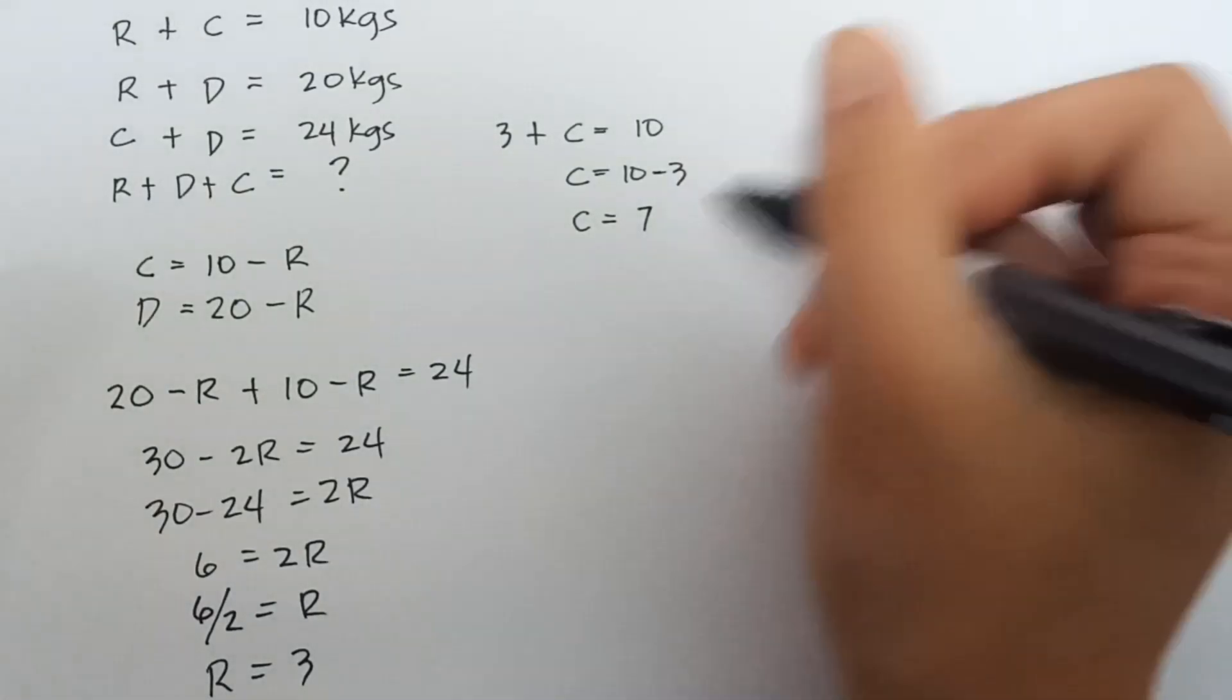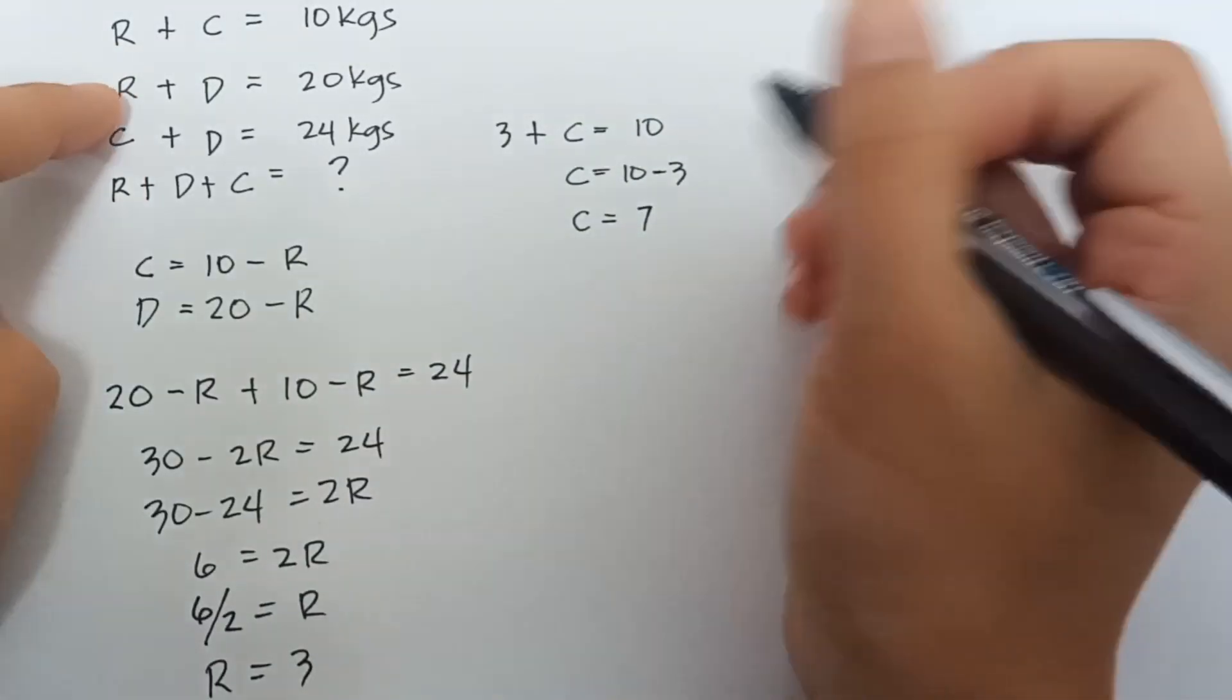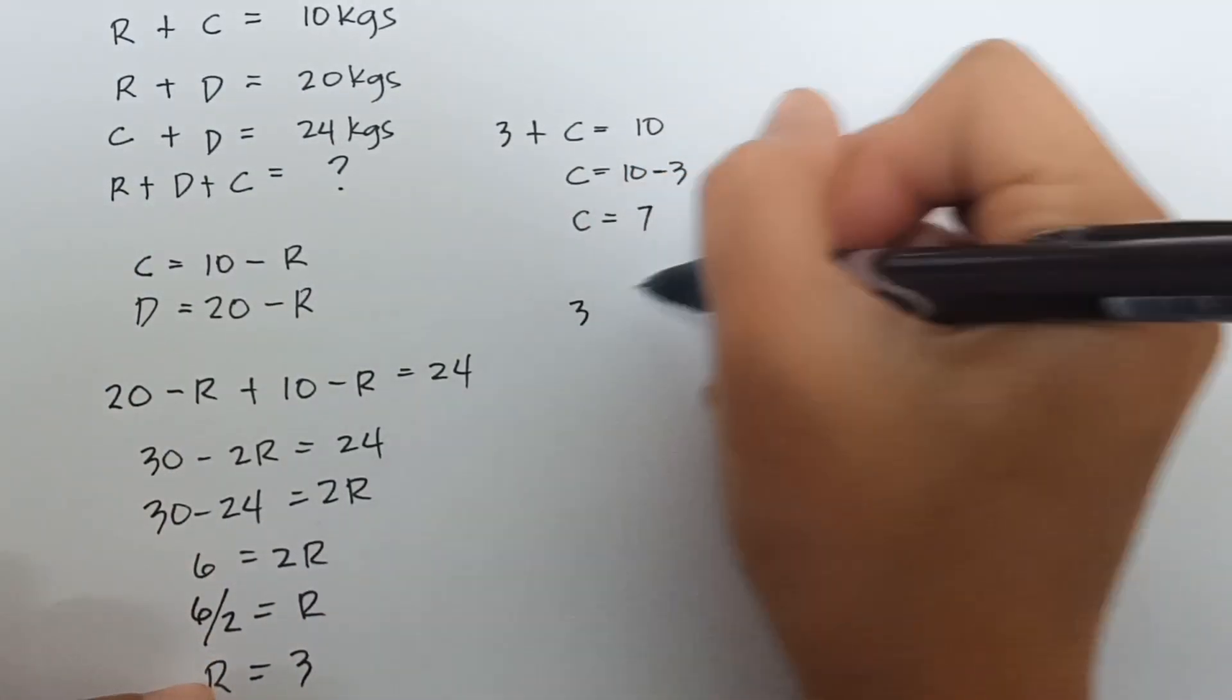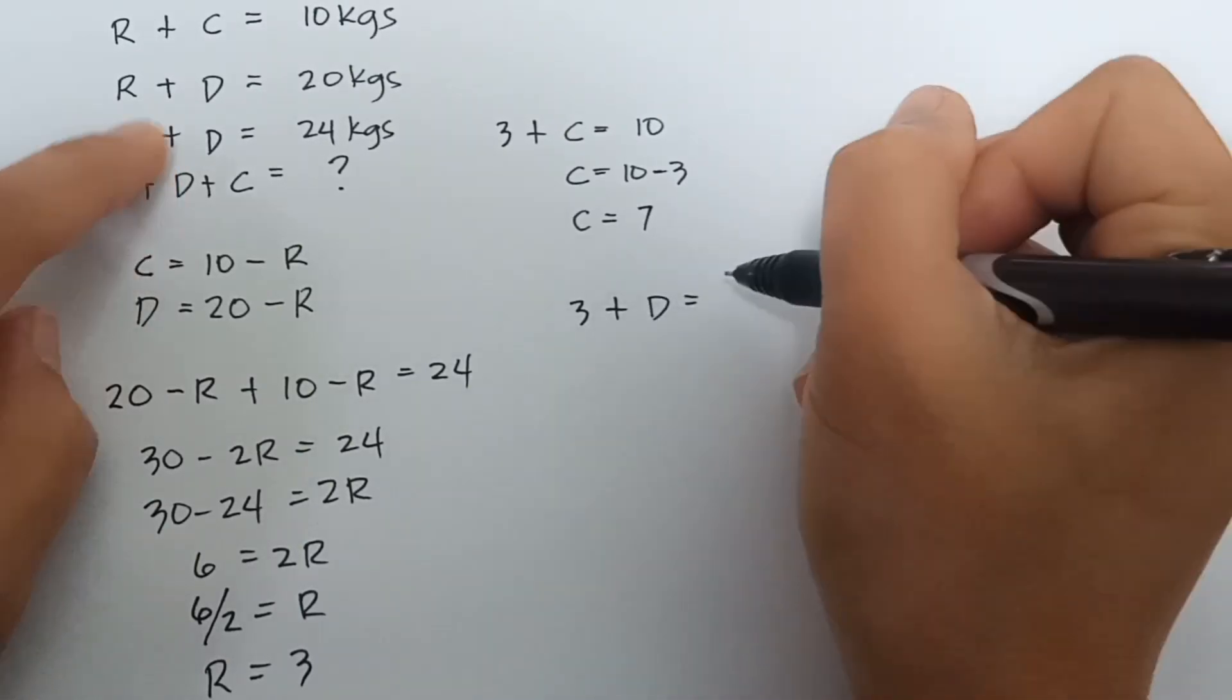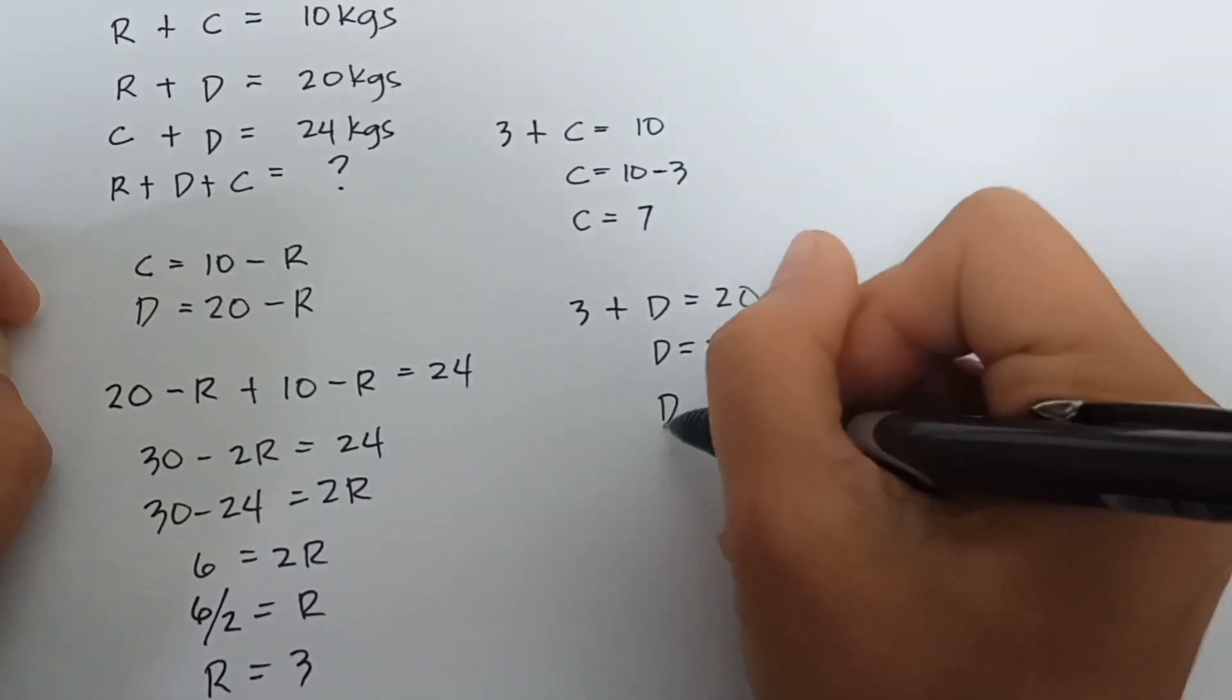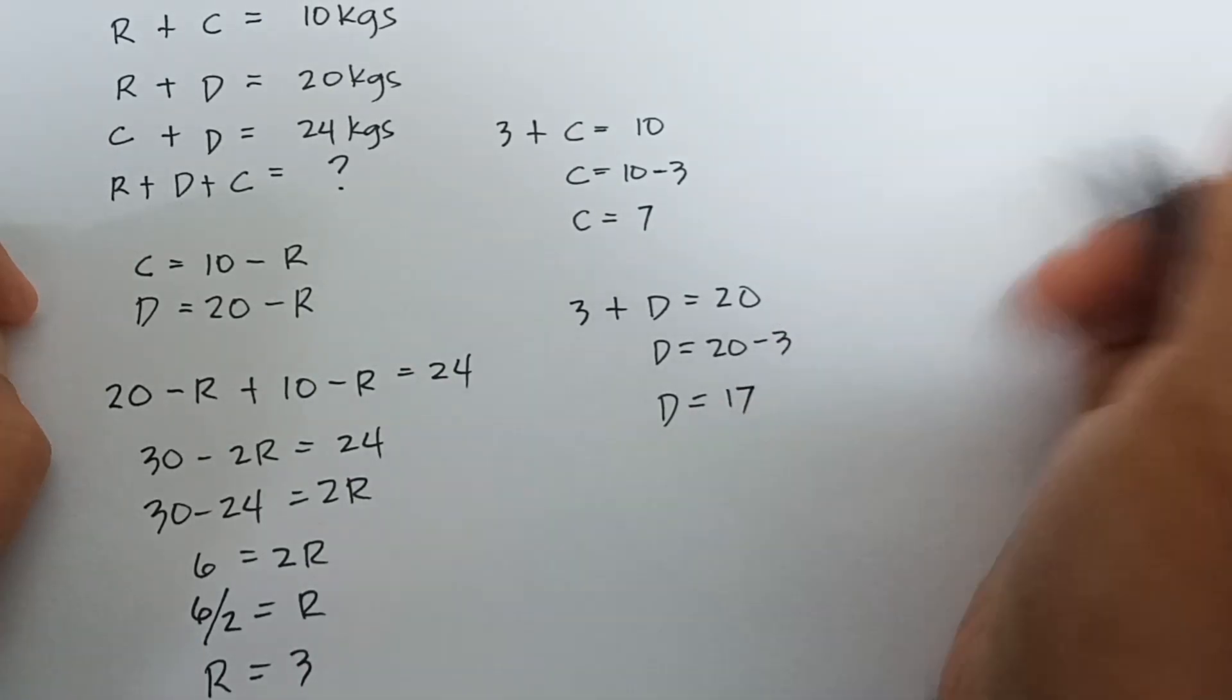So, let's use the equation of this one. Rabbit plus dog equals 20. So, rabbit, which is 3, 3 plus dog equals 20. So, dog equals 20 minus 3. Dog equals 20 minus 3 equals 17.